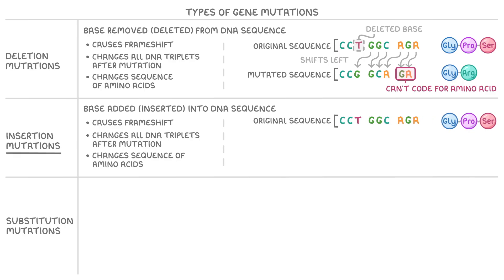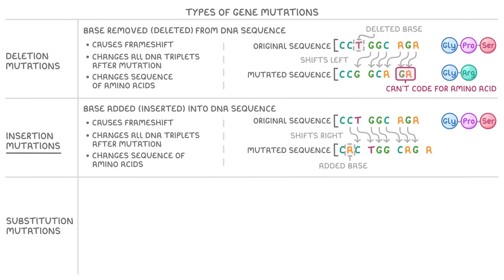With the same original sequence, if a mutation added the adenine base here, every base after the insertion shifts to the right by one. The sequence now codes for the amino acids valine, threonine, and valine, with one extra base that now can't code for any amino acid.